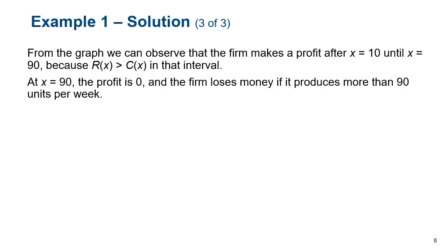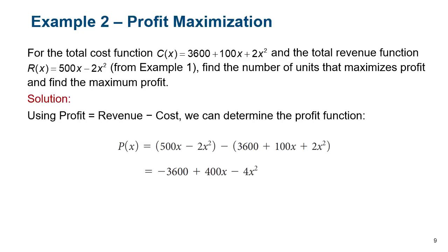So from the graph, we can observe that the firm makes a profit after they produce 10 units all the way up until they produce 90 units, because that's when the revenue function is greater than the cost function, it's graphed above it. If they produce exactly 90, that's where they cross. So that's a profit of zero, that's a break even. And then as we saw, if they produce more than that, the cost function gets higher than the revenue function, and thus they start losing money. So they definitely don't want to produce more than 90. In fact, they don't even want to produce 90 because they break even. They want to produce somewhere between 10 and 90.